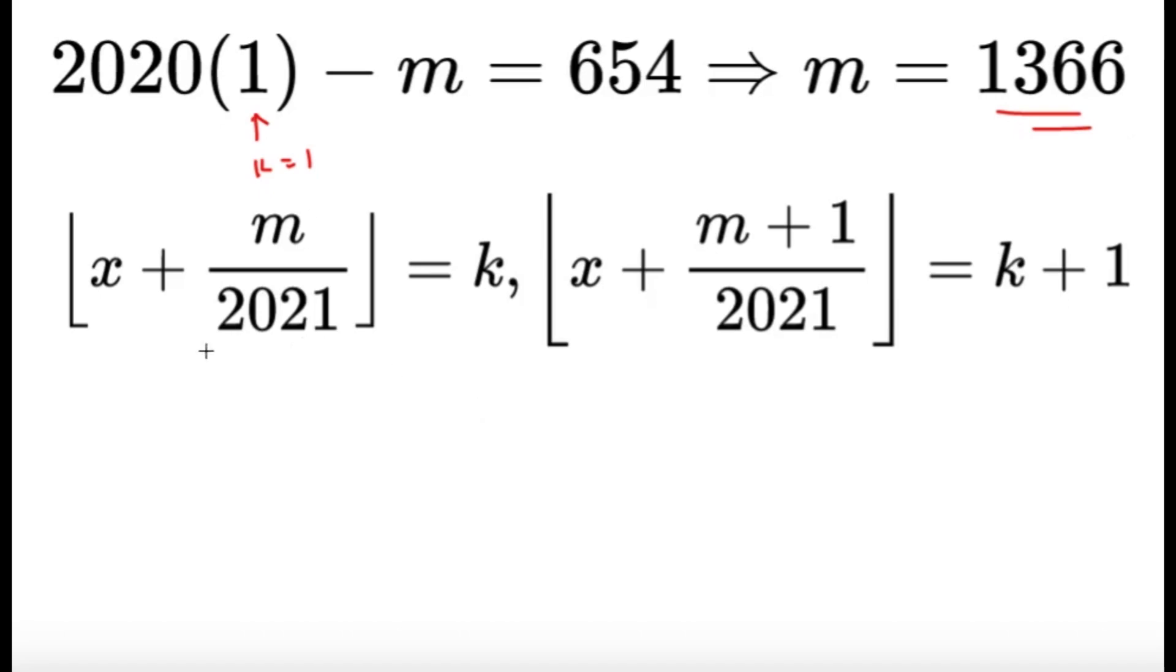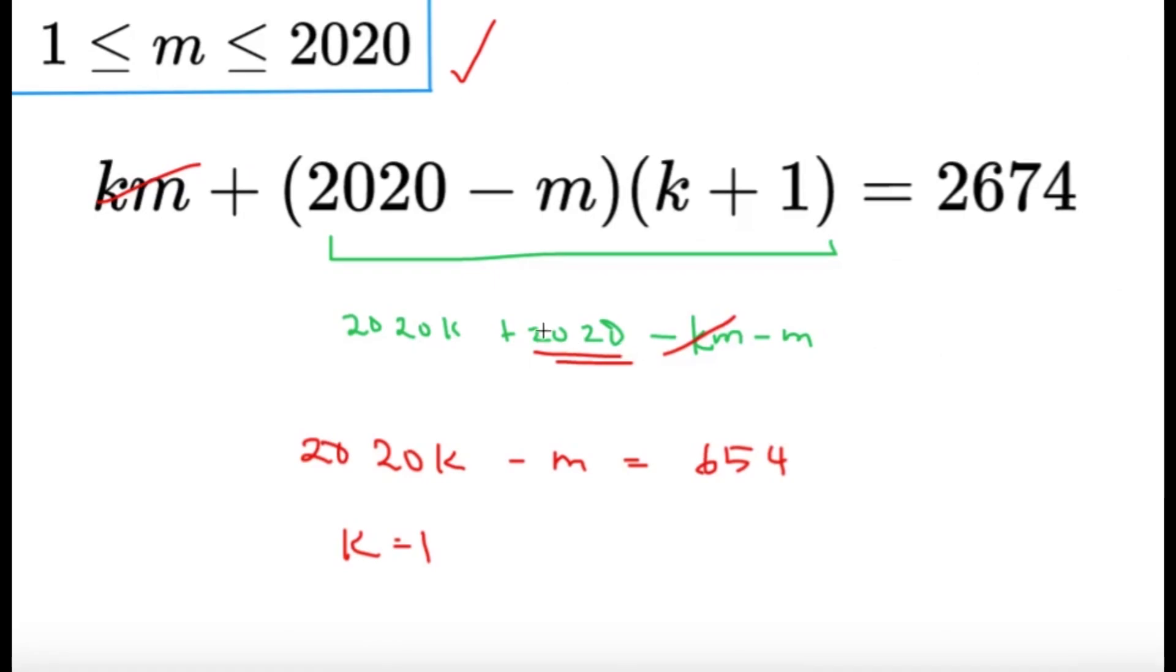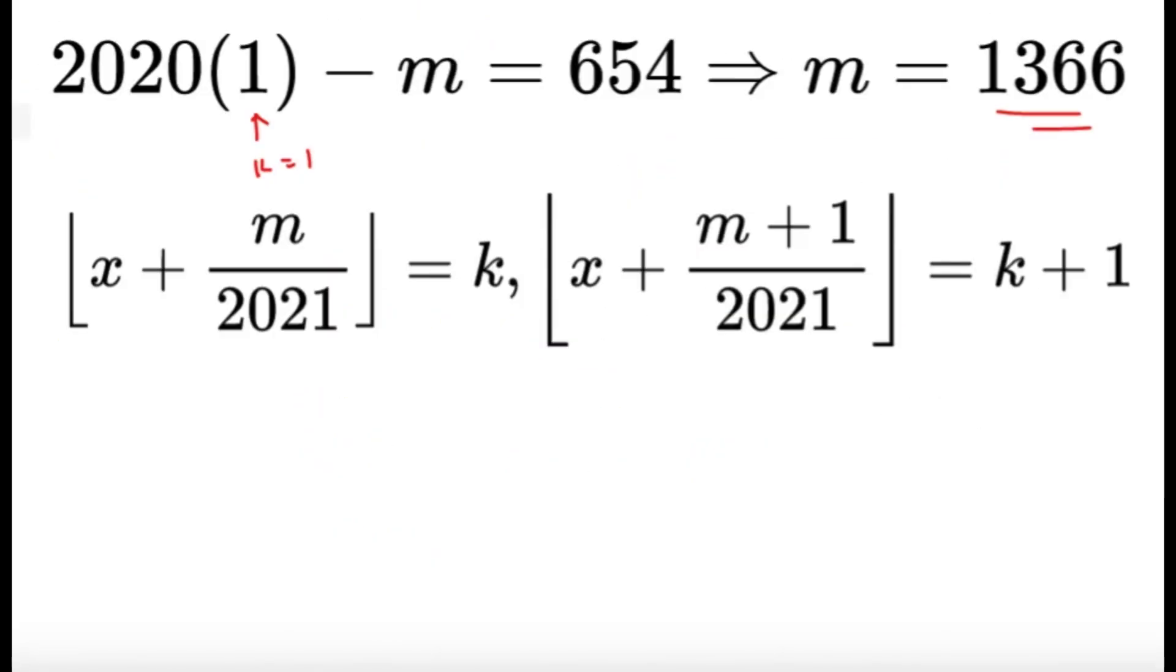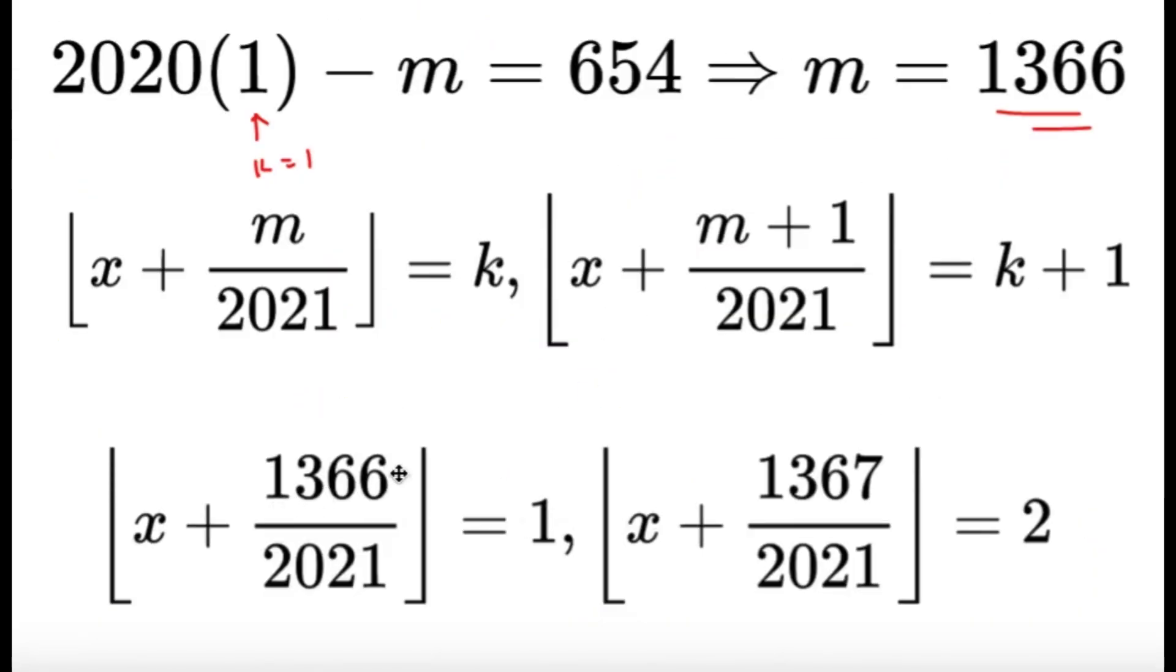So with this, since we made the assumption that these two are correct based from this, we just substitute them. We know that x plus 1366 divided by 2021, that's going to equal to 1. And x plus 1367 divided by 2021, that's going to equal to 1 plus 1, and that's 2.